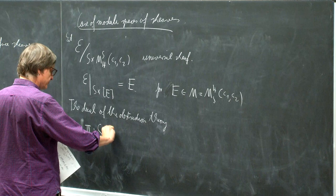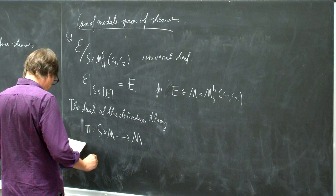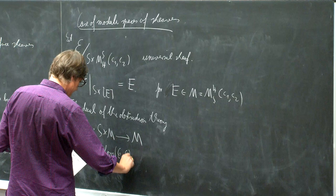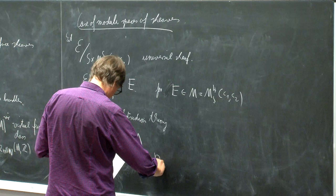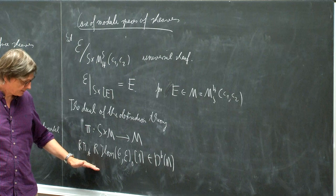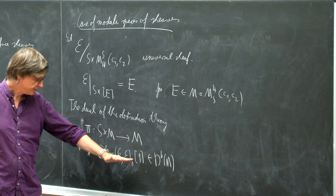We look at the projection from S times the moduli space to the moduli space. The dual of the obstruction theory is R p_* of R Hom(E, E), shifted by 1 in the derived category of M. An element here would basically be a complex of vector bundles on M, and this shift by 1 means we have all the signs opposite if we look at the alternating sum.